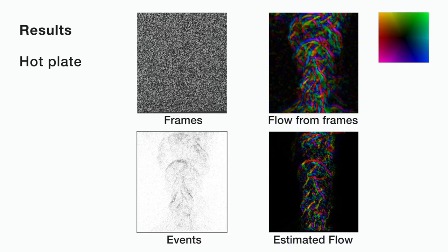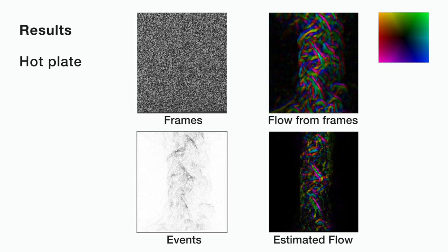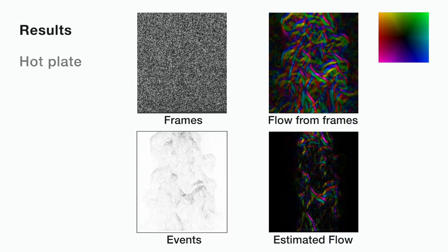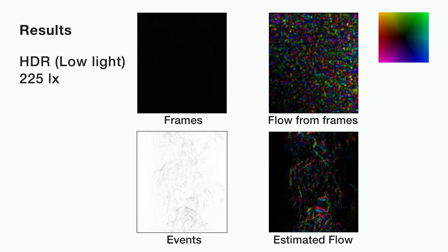These are the results. On the top, we have frames and its corresponding optical flow. On the bottom, we show the events and the flow estimated by our method. This is a high dynamic range example.